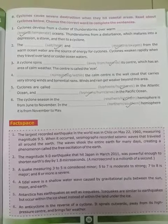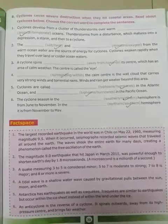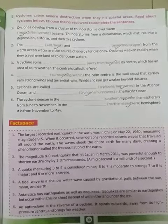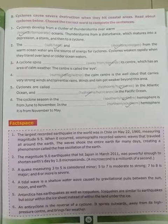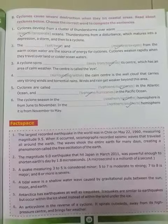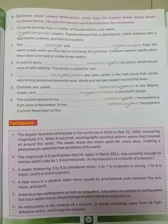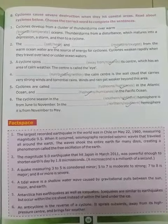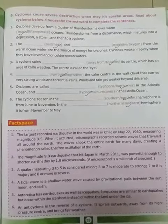Third, a cyclone spins towards its center which has an area of calm weather. The center is called the eye.